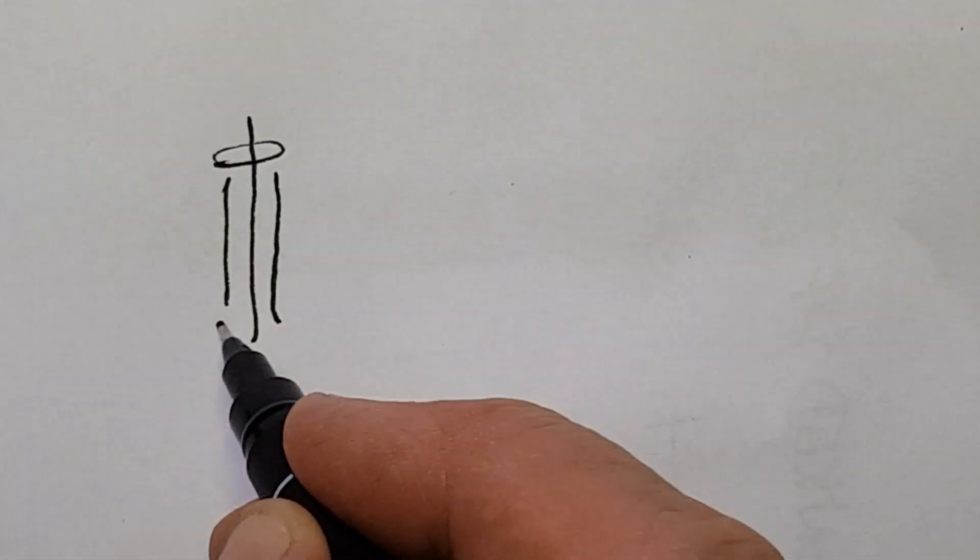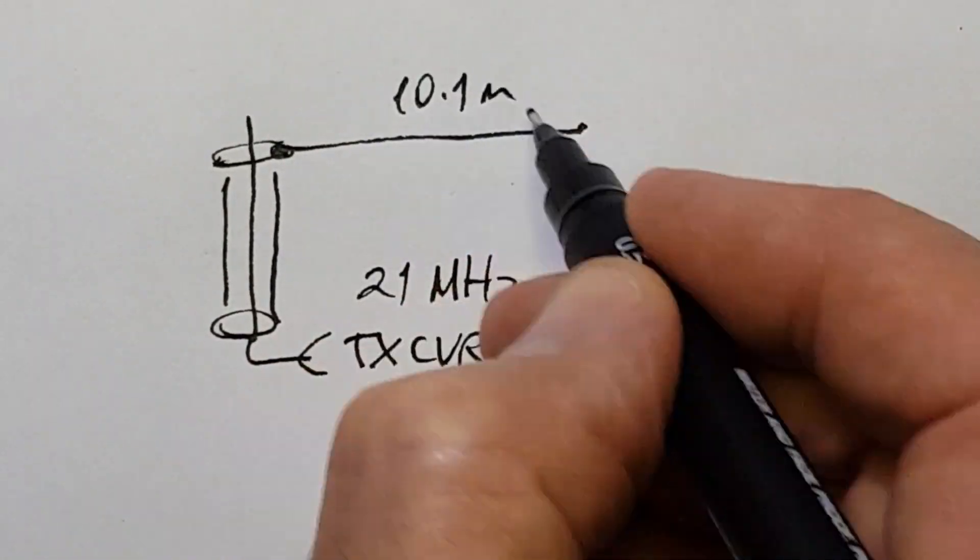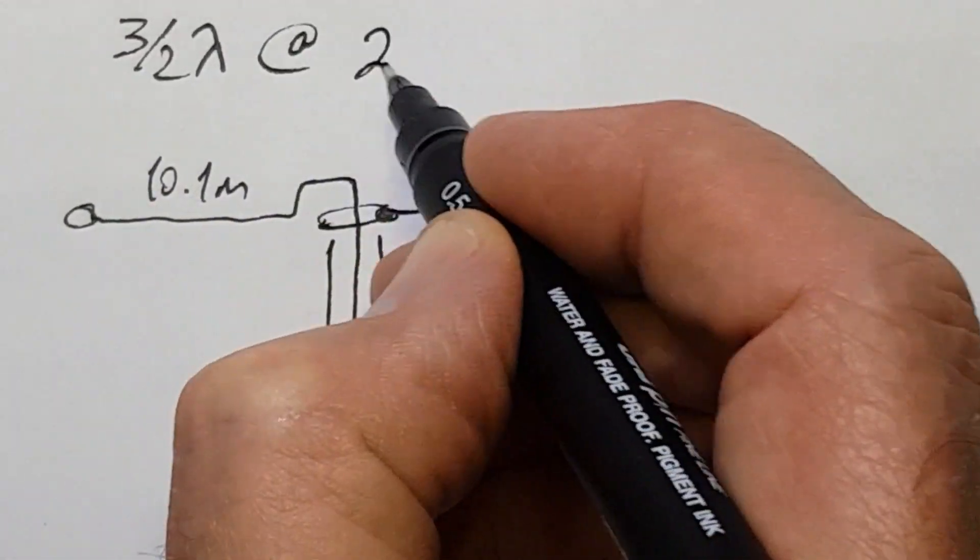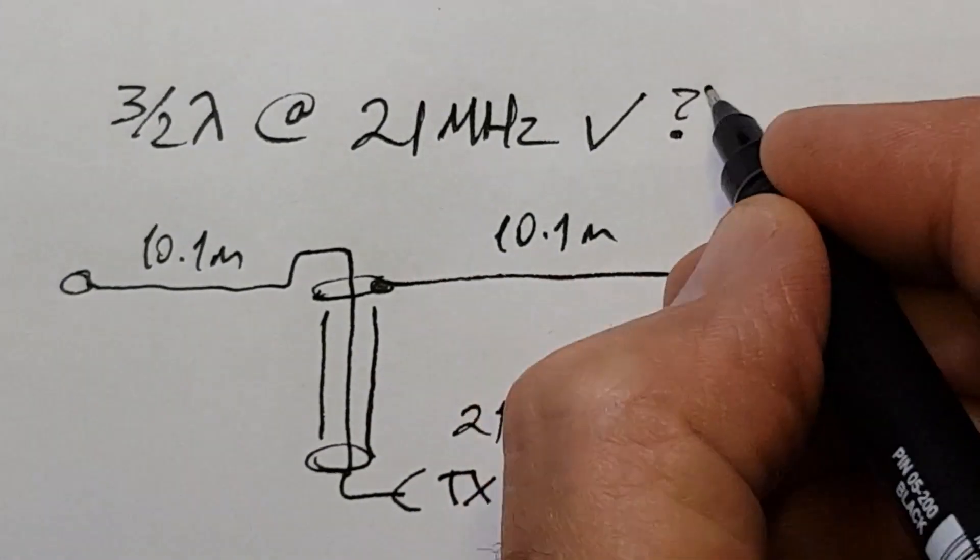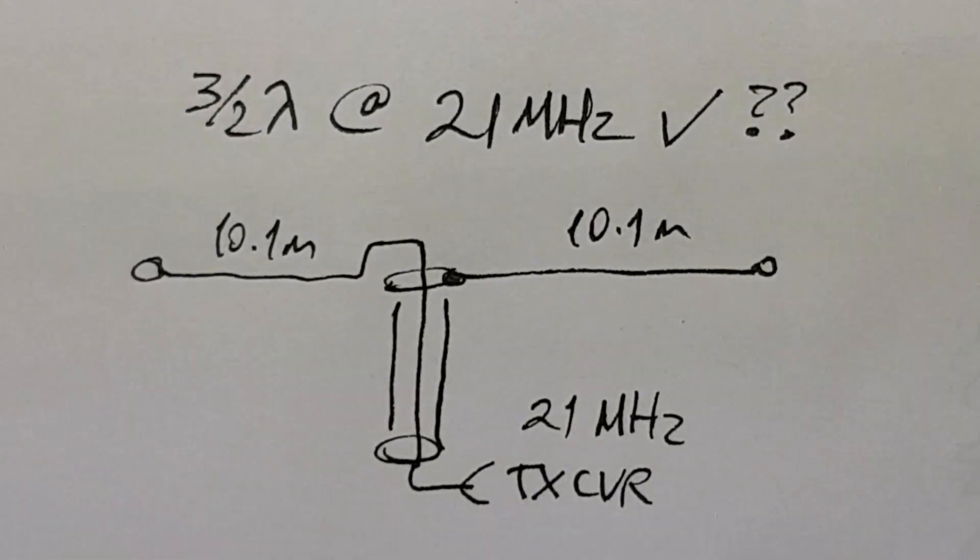So with cycle 25 hotting up, I wanted to add a higher band. Well, you can just keep chopping into the 20 meter dipole to do that. But I've known for a long time that it was possible to use a 40 meter half wave dipole on 21 megahertz on 15 meters, because 21 megahertz is the third harmonic of 7, right?